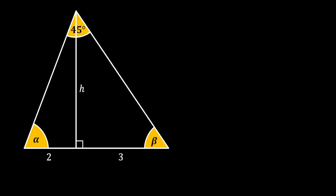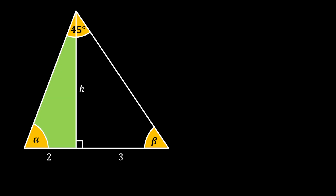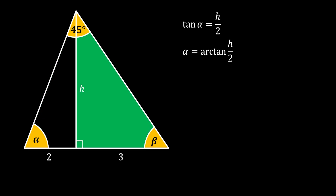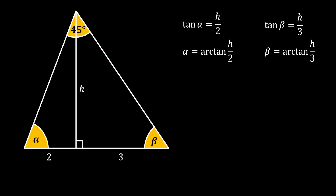Looking at the right-angle triangle on the left, we use trigonometry and say that the tangent of angle alpha is equal to H over 2. This means alpha equals arctangent of H/2. Similarly, for the right-angle triangle on the right, the tangent of angle beta equals H over 3, which means beta equals arctangent of H/3.